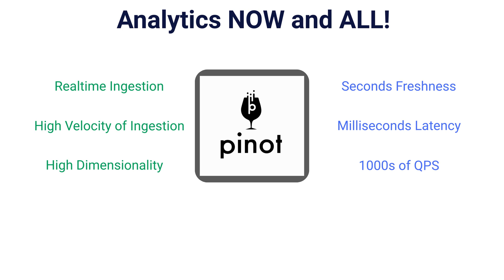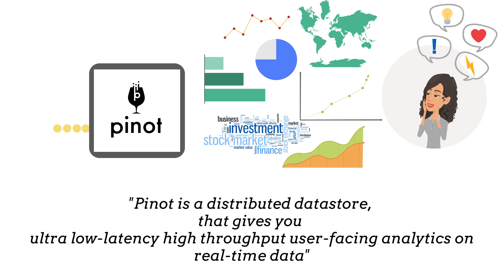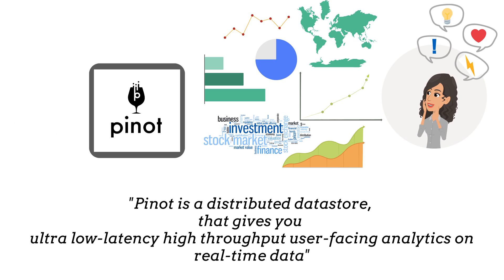Data in Pinot can have extremely high dimensionality and at the same time support ad hoc slice and dice. Pinot has powerful indexes and smart optimizations in routing, data partitioning, segment assignment, server assignment, combined with a rich query set, making it a power horse of analytics. Plus, Pinot is a distributed system and comes with high availability, reliability, both horizontal and vertical scalability and a low cost to serve. Now, this definition would make more sense. Pinot is a distributed data store that gives you ultra-low latency, high-throughput, user-facing analytics on real-time data. Pinot will help you build a rich analytics ecosystem for your customers and help them succeed by putting the power of instant insights into their hands.